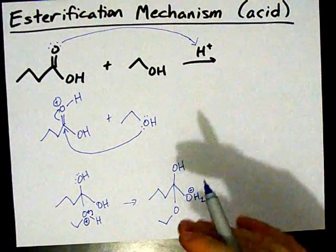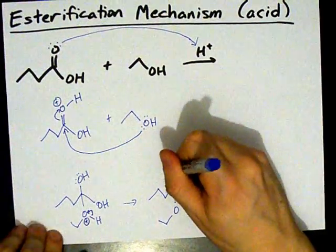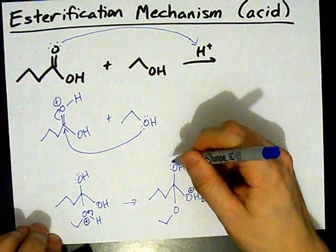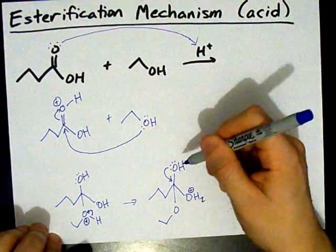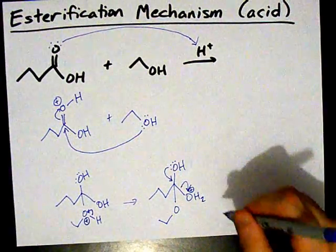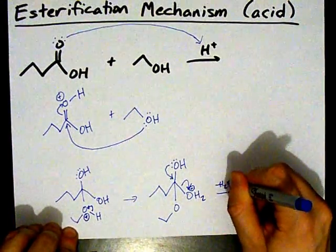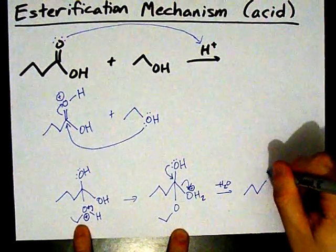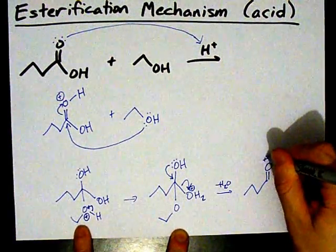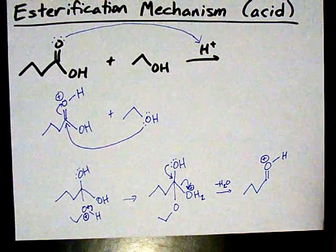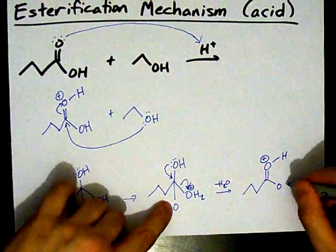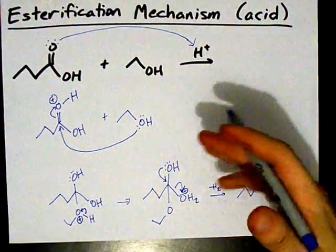Now this oxygen has three bonds — it's the one with the formal charge of plus one, and it is just a stellar leaving group. So stellar is this leaving group that the electrons on the other oxygen are willing to make a pi bond as long as that OH2 leaves. Notice we're losing water — we're losing an H2O here. And we're recreating our carbonyl oxygen, which unfortunately still has a hydrogen, and the only other bond to the carbonyl carbon is to this oxygen here. That's starting to look like an ester.